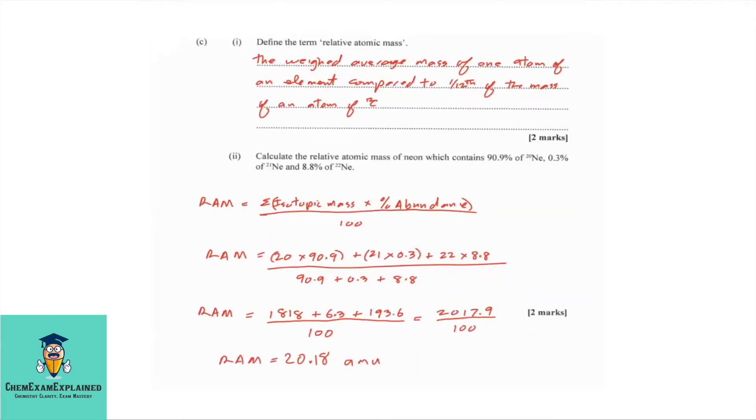Part C, 1. Define the term relative atomic mass. The weighted average mass of one atom of an element compared to 1 twelfth of the mass of an atom of carbon-12.